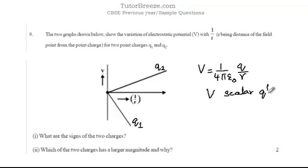Since it is a scalar quantity it will have a positive or negative sign depending on whether the charge is positive or negative. You can see from the graph that the potential is positive for q2 and negative for q1. So in this case q1 is a negative charge and q2 is a positive charge.